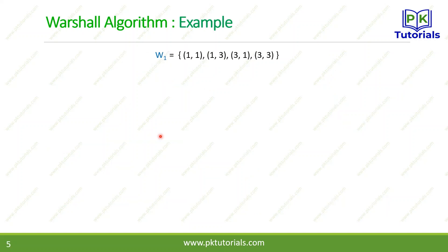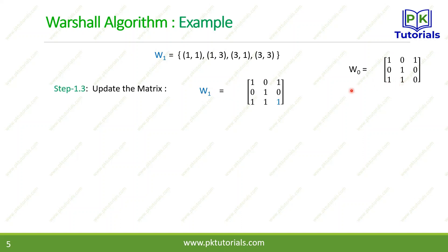Now W₁ is formed. We update the original matrix W₀ to get W₁. Checking: (1,1), (1,3), and (3,1) are already present. Only (3,3) is the new pair not yet available, so we change that position to 1. The first step (first phase) is now complete.